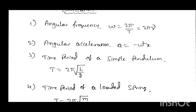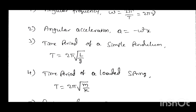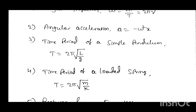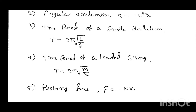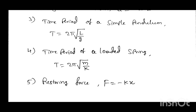Next, time period of a loaded spring: T equal to 2 pi times root of m by k, where m is the mass attached to the spring and k is the spring constant or force constant. Next, restoring force of a spring: F equal to minus kx, where k is the force constant, x is the displacement, and the minus sign indicates direction towards the mean position.